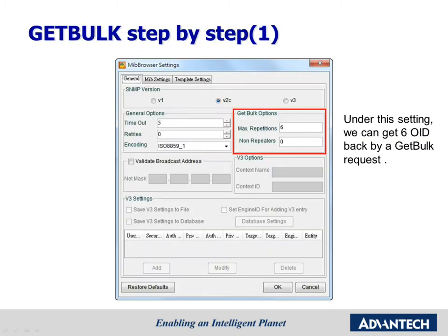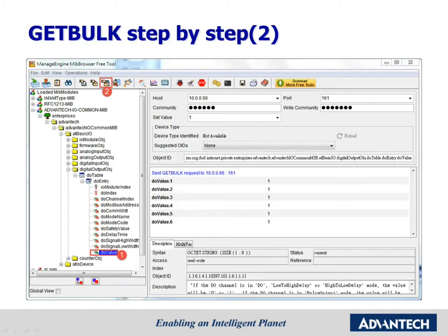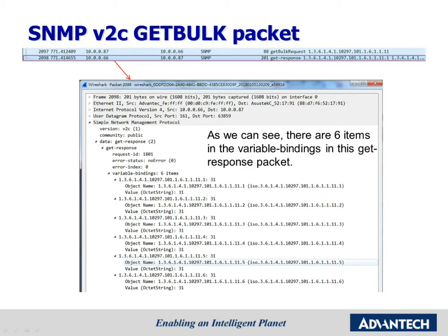In the MIB Browser settings page, type in the GET BULK options. In this example, we set maximum repetitions to 6 and non-repeaters to 0. Under this setting, we can get 6 OIDs back in one GET BULK request. Following the instructions in this slide, we can get 6 OIDs back in one GET BULK request. We can see 6 OID responses in one package, with 6 items in the variable binding of the GET response package.